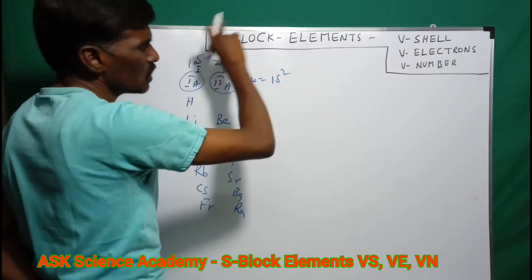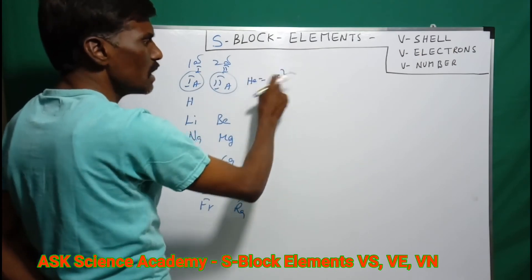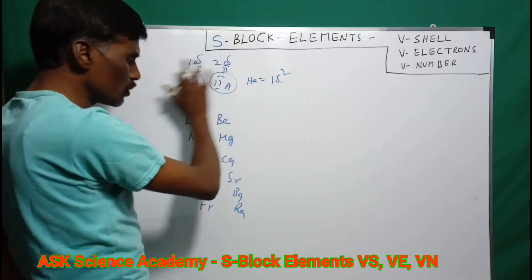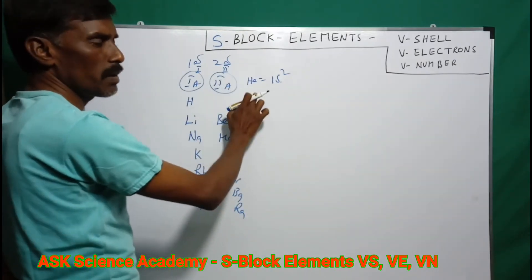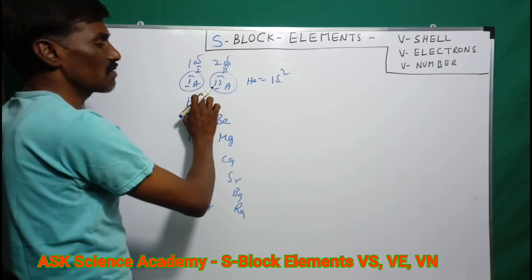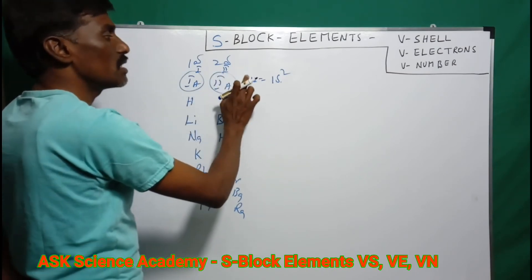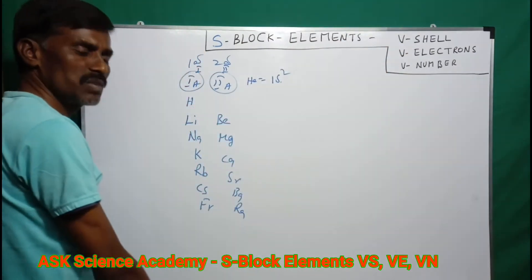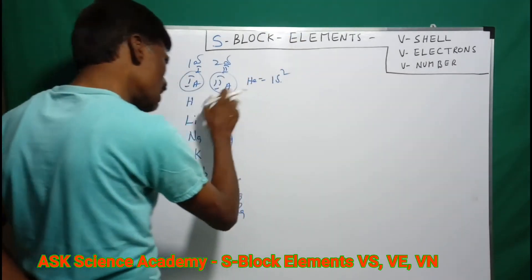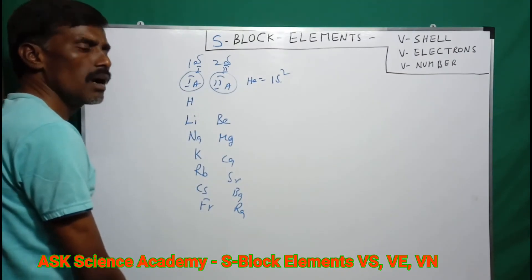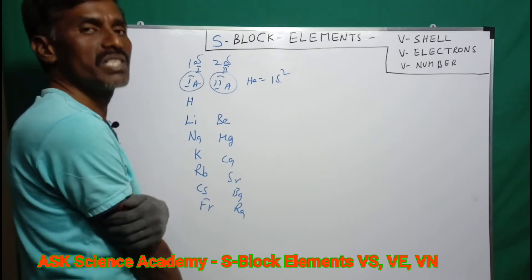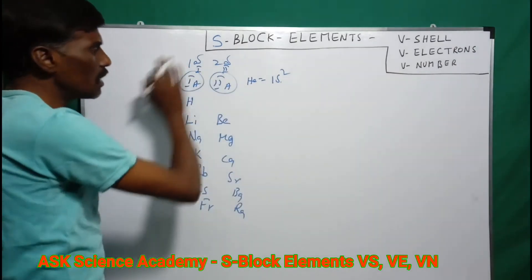1s1 is Hydrogen and 1s2 is Helium. The differentiating electron here is in the s-orbital, so this S-block molecule is called S-block. Helium is also an S-block element, with its differentiating electron in the s-orbital.